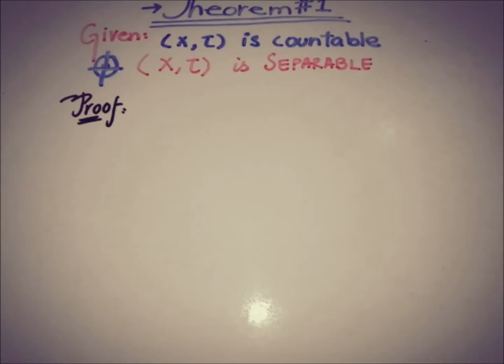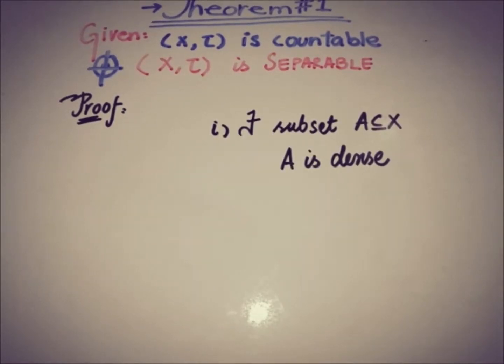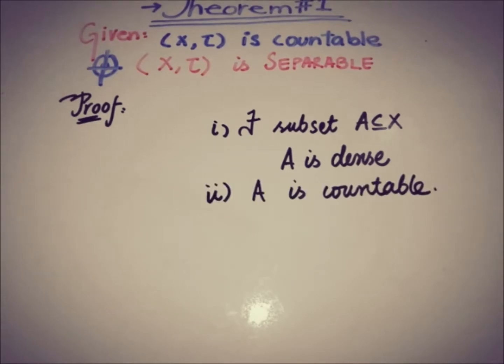If you recall the definition of a separable space, then a space is said to be separable if it has two properties. The first is that if we take any subset of X, then any subset of X should be a dense set and the second property is the subset should be a countable set.